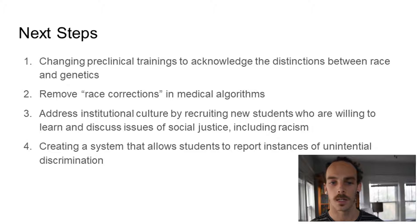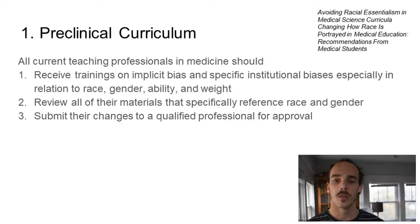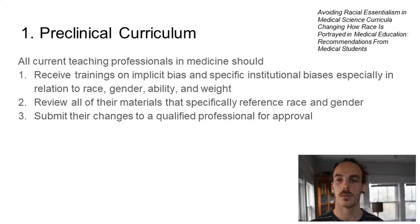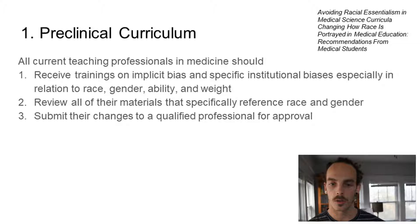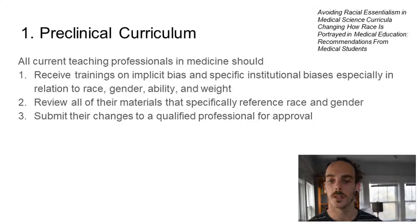So first, the preclinical curriculum. All current teaching professionals in medicine should first receive trainings on implicit bias and specific institutional biases, especially in relation to race, gender, ability, and weight. Second, they should review all of their materials that specifically reference race and gender — that can be done fairly easily with a Control or Command F search using those terms, and especially with the gender term, that should include a search for 'sex' because those things are often misused. Third, they should submit their changes to a qualified professional for approval. The person reviewing this information needs to have received training on what is appropriate in this situation.